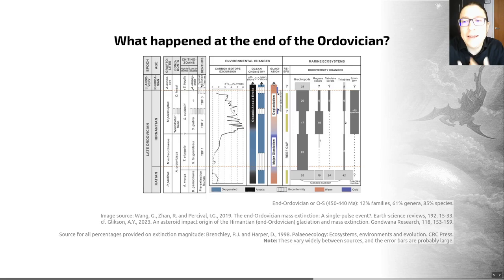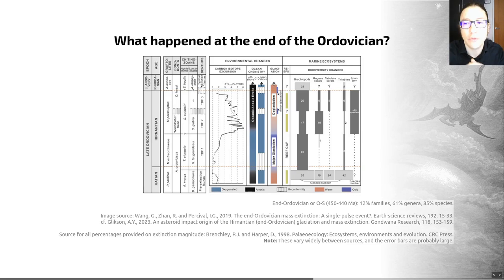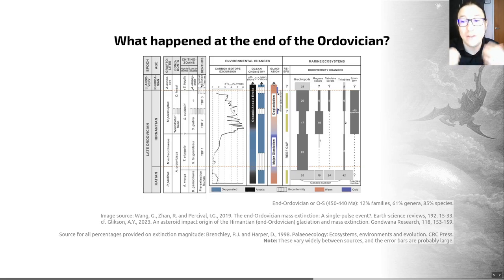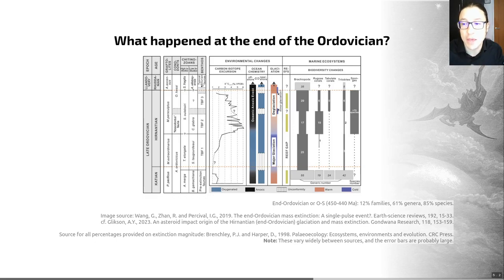However, when this glaciation occurred, ice spread north in all directions, cooling down the southern oceans, locking water into the ice sheets, and lowering the sea levels globally. As a result of this, polar faunas moved towards the tropics, and many warm water faunas then died out. We saw massive extinctions in this whole tropical belt, where these species disappeared.